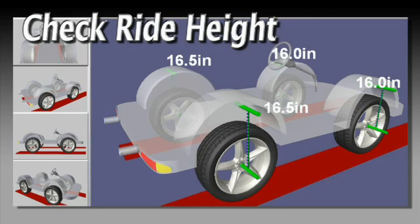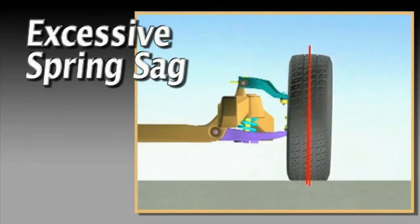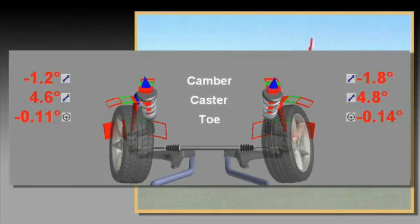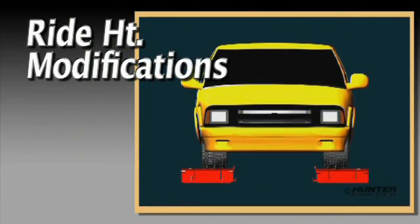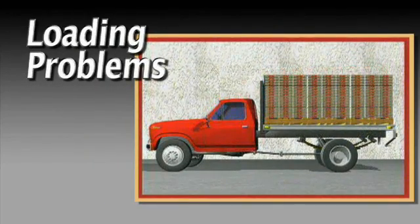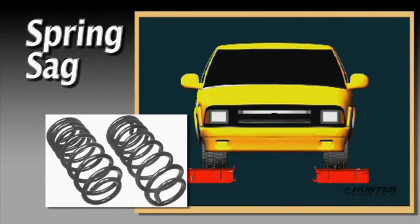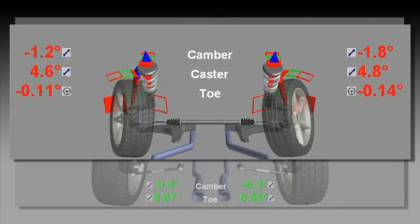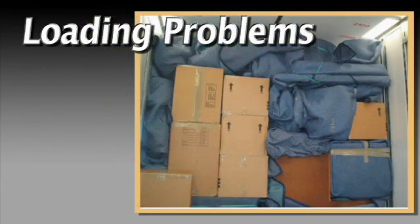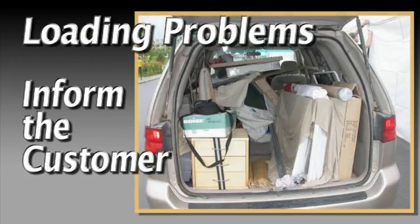If the alignment errors are not restricted to one wheel position, it would be wise to investigate ride height further. Excessive spring sag on certain vehicles may cause large alignment changes. Ride height modifications or vehicles suffering from loading problems may also bring about large shifts in alignment. Spring sag may only be resolved through spring replacement, alignment errors due to height modification may require the use of aftermarket kits, and loading problems will usually require educating the customer.